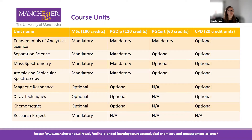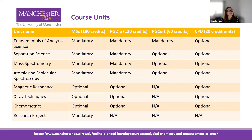On this course you will have mandatory modules to build your core knowledge, and also optional modules relevant to your interests — either relating to your current field of work or areas you want to explore. Course units include the Fundamentals of Analytical Science, which is studied first and is mandatory across the MSc, postgraduate diploma, and certificate. Mandatory units for the MSc and postgraduate diploma include Separation Science, Mass Spectrometry, and Atomic and Molecular Spectroscopy. You then have optional units such as Magnetic Resonance, X-ray Techniques, and Chemometrics. And if you're studying the full Masters, you will also complete the research project.